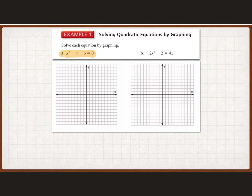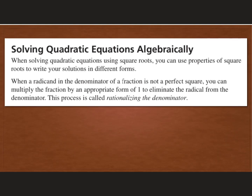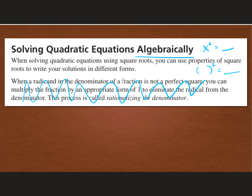We're going to skip graphing for now and come back to it at the end of the notes. We're going to be solving quadratic equations algebraically first — cases where we have x squared equals a number, or parentheses squared equals a number. We want to isolate our variable. The second paragraph talks about rationalizing the denominator, which we did before with square roots, so we're going to ignore that and just focus on solving.